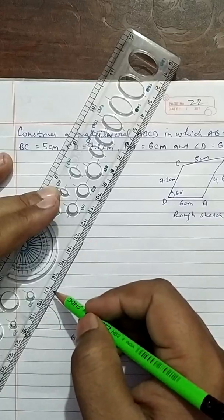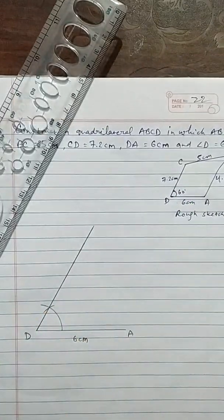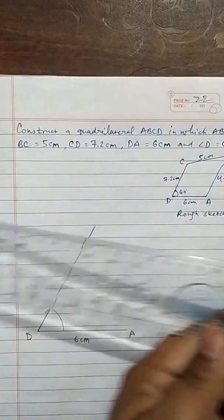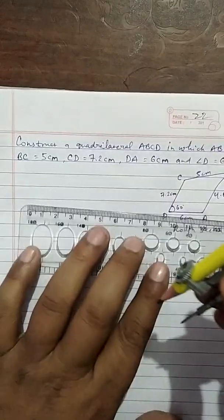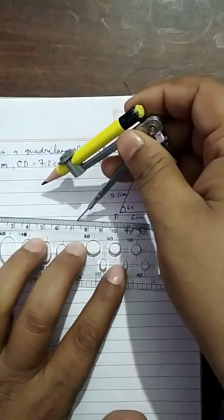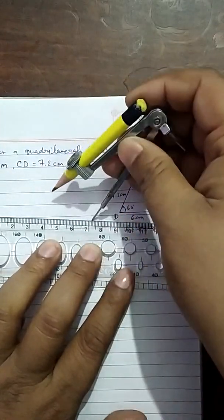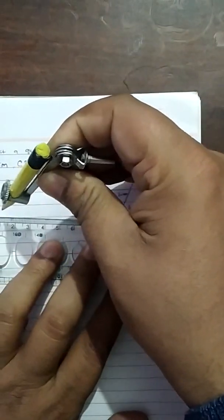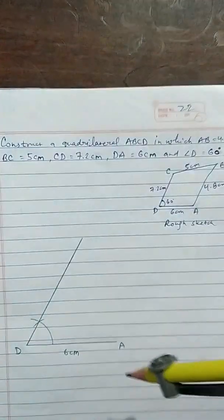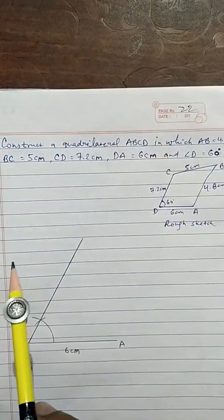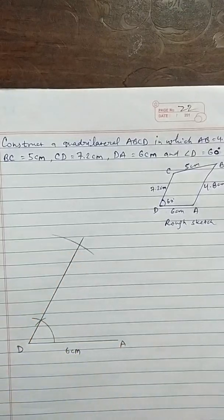You can measure it 7.2cm or you can cut it after that. Now, we will measure 7.2cm because we have to mark DC 7.2cm. 7.2cm is this, and opening will be from 0. Like this. This is the 7.2 opening with the mark here, an arc. This cutting is C.